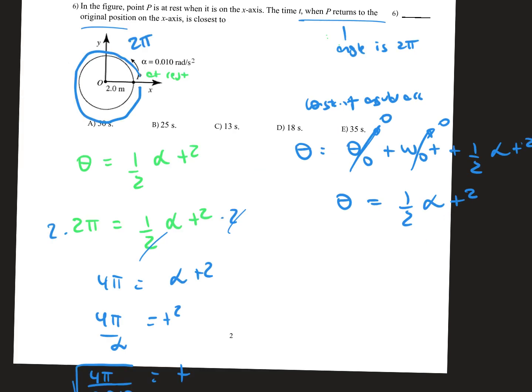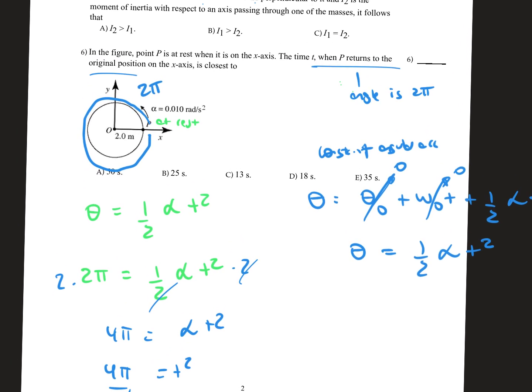Now as we said at first, we can rewrite theta as 2π, and that's the angle it makes when it returns to the original position.